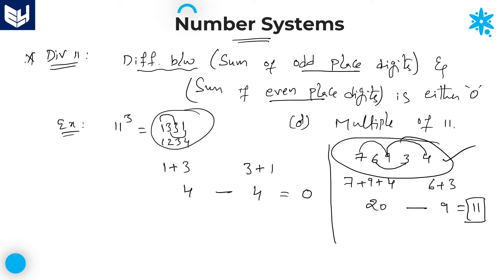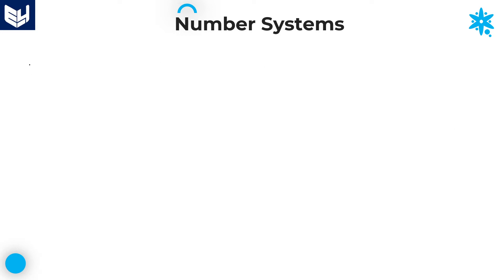The divisibility rule of 11 is very important for all campus placements as well as various competitive examinations. Next, divisibility rule of 12.